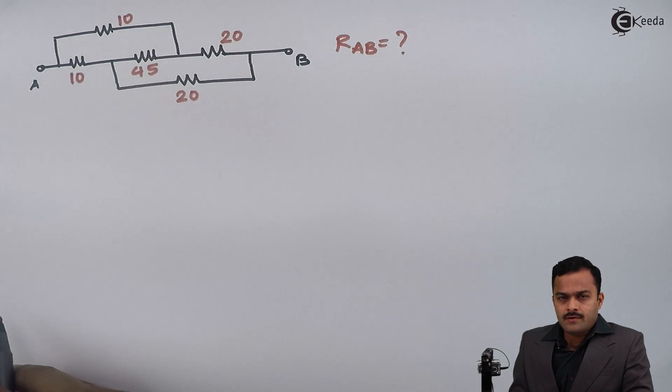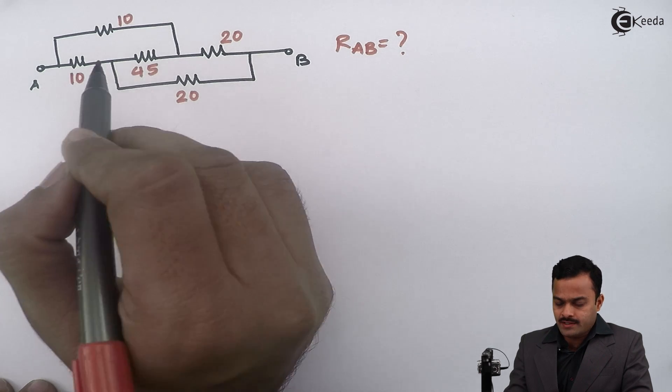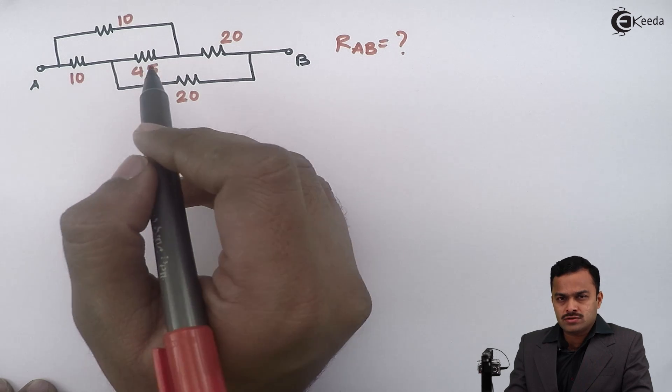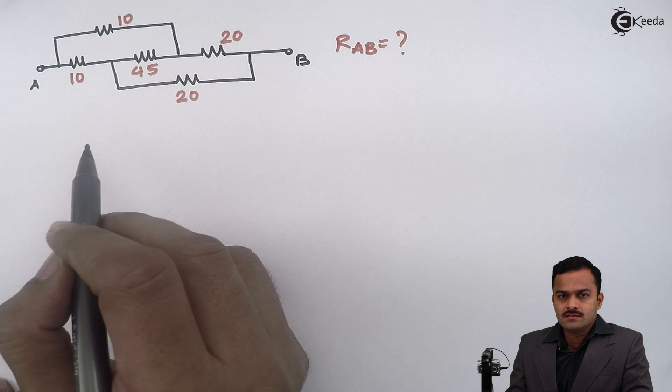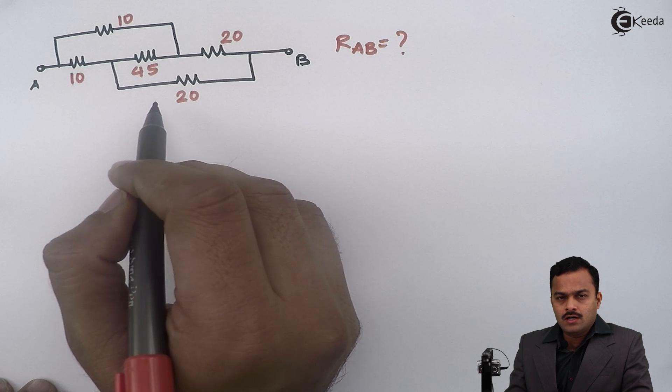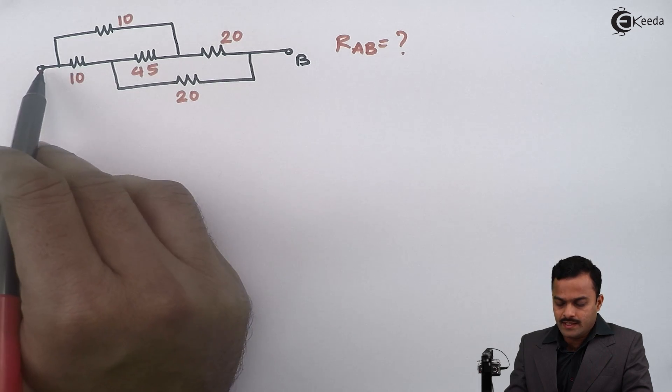So here if I see the network properly, I will not find out any series or parallel connections given directly. But if I simplify the network by using any star to delta or delta to star conversion, then I may get some more series and parallel connections which will give you a combination ultimately into a single resistance between A and B.